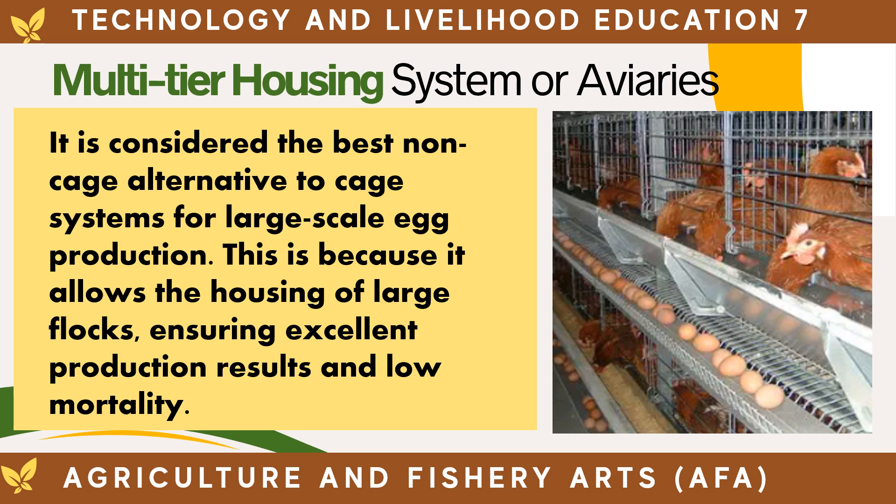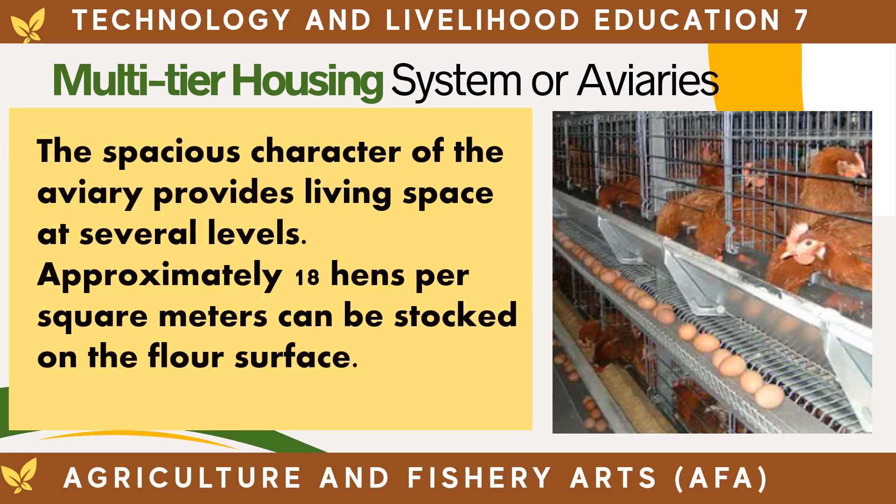The multi-tier housing system, or aviaries, is considered the best non-cage alternative to cage systems for large-scale egg production. It allows the housing of large flocks, ensuring excellent production results and low mortality. The spacious character of the aviary provides living space at several levels, and approximately 18 hens per square meter can be stocked on the floor surface.